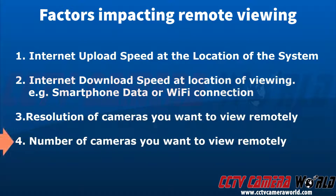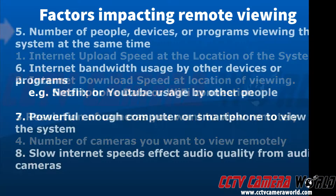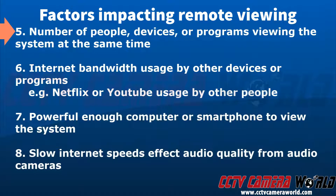Fourth is the number of cameras you want to view remotely. Each camera requires a certain amount of data, so for each device you have to account for each bit rate. Fifth is the number of people, devices, or programs viewing the system at the same time. This is extremely important because when you're accessing the system, that data has to be pulled from it. If multiple people or devices are viewing simultaneously, you'll create a bottleneck — too much data trying to go out but not enough throughput — and you'll experience lagging.